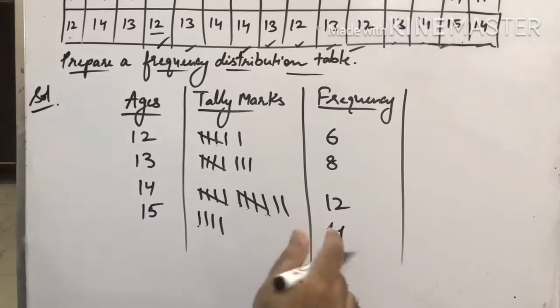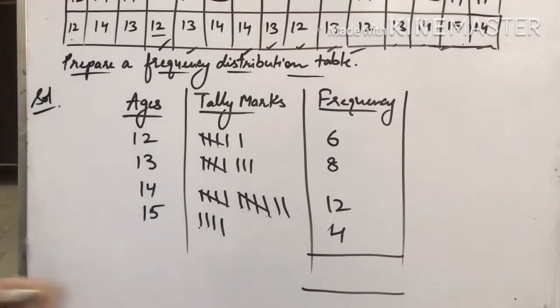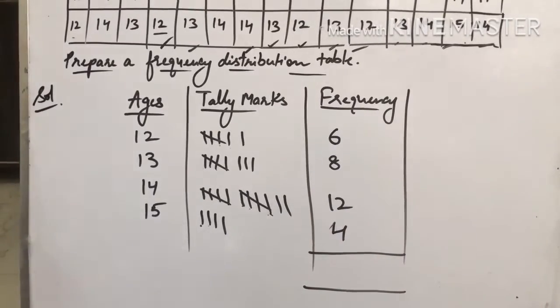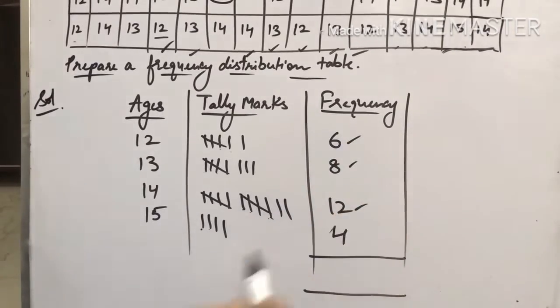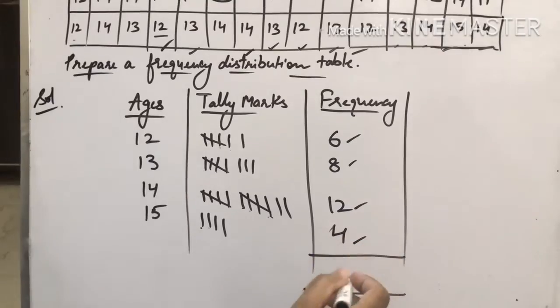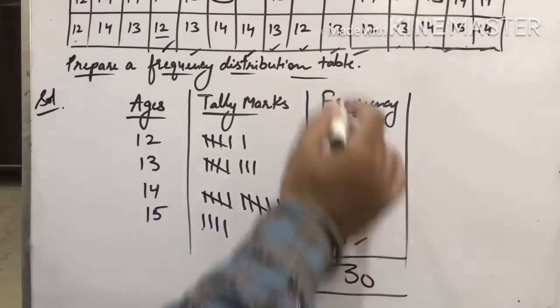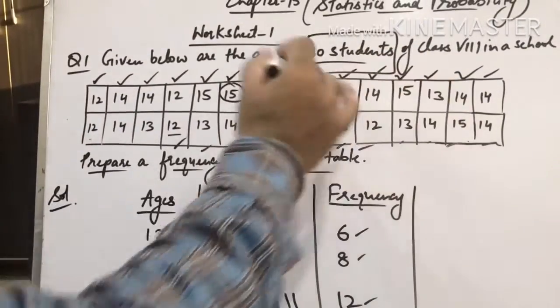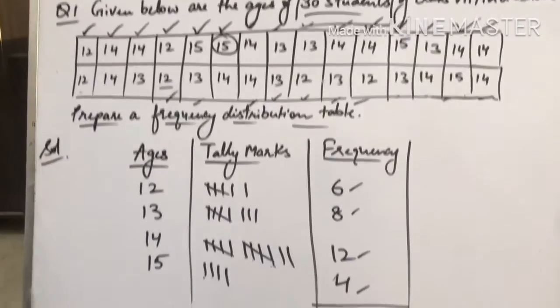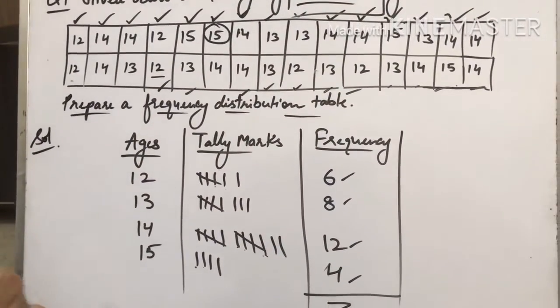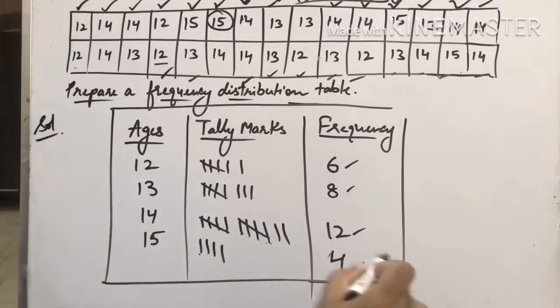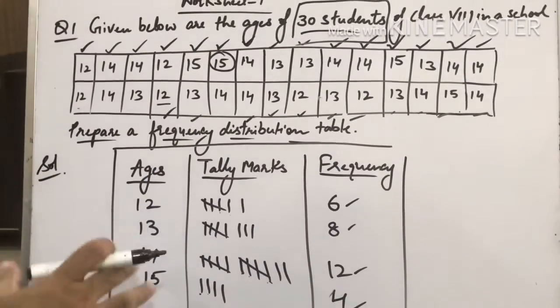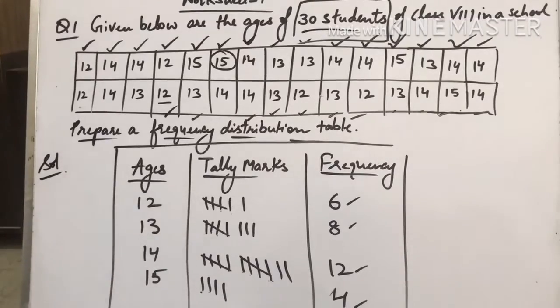Now you can total this frequency table to check whether the table I made is correct or not. 6 plus 8 is 14, 14 plus 12 is 26, 26 plus 4 is 30. Total students in the question were how many? 30 students. So if your total doesn't match, that means you made a mistake somewhere in the table. This is my frequency distribution table, which represents the above data in a frequency distribution table.